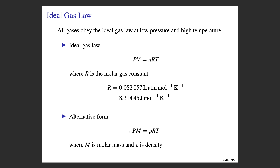This law also goes by the name the ideal gas equation of state. The ideal gas law says that all gases at low pressures obey the ideal gas law: the product of pressure times volume equals the number of moles of gas times the gas constant times the temperature, where the gas constant takes on the value 0.0821 liter atmospheres per mole per Kelvin. The gas constant is a proportionality factor between pressure times volume and number of moles times temperature.